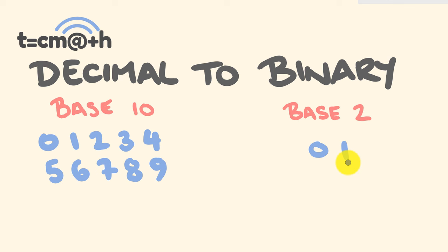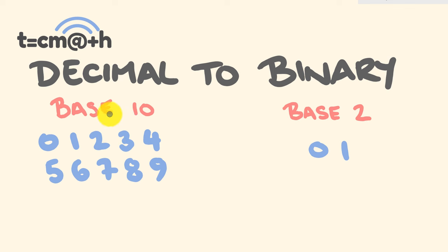Decimal numbers are base 10 numbers, which use the digits 0, 1, 2, 3, 4, 5, 6, 7, 8, 9 — there are 10 digits. What also happens is it goes up by factors of 10 each time, like we go from units to 10s to 100s, and each time we're going up 10 times the amount as we move up to each next place value.